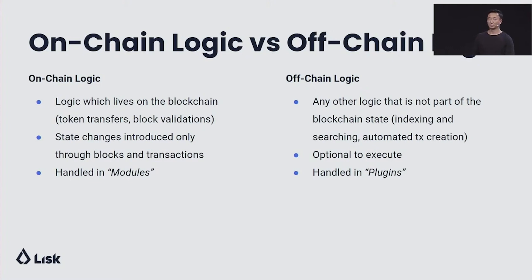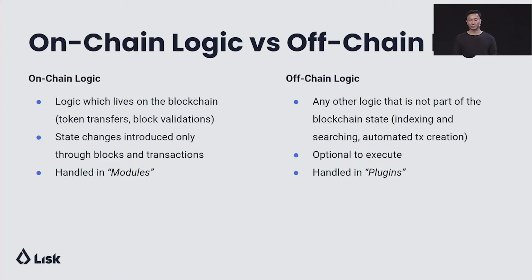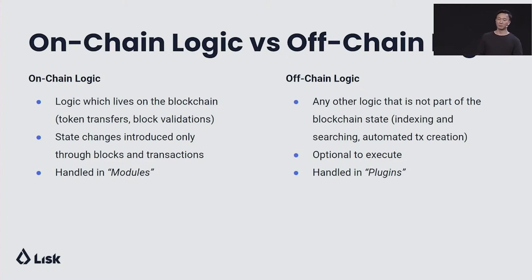I mentioned the terms on-chain logic and off-chain logic — so what do they exactly mean? On-chain logic is any logic which lives on the blockchain. For example, token transfers and block validations. On-chain logic introduces state changes only through blocks and transactions, and it is always handled in Lisk modules.